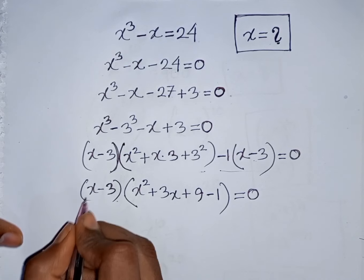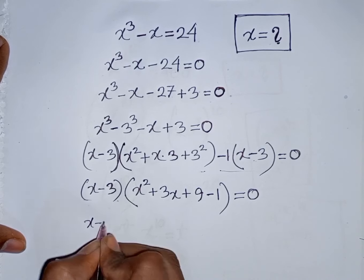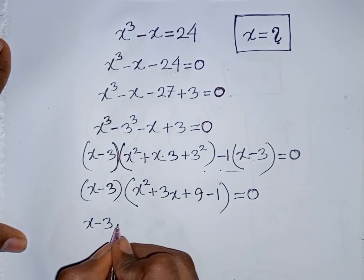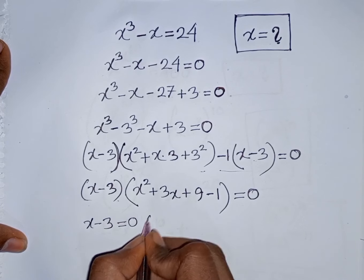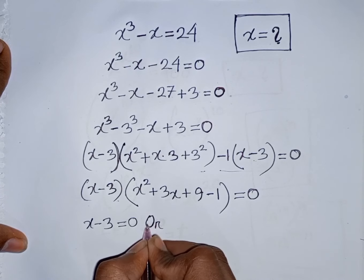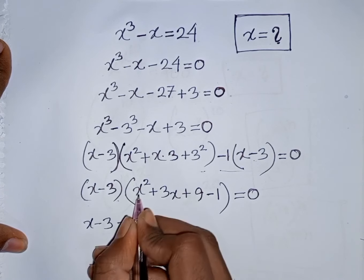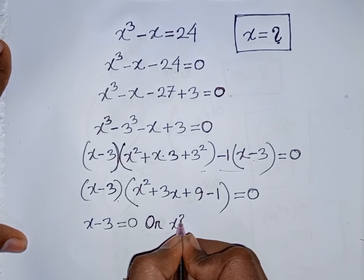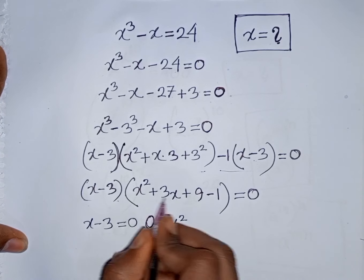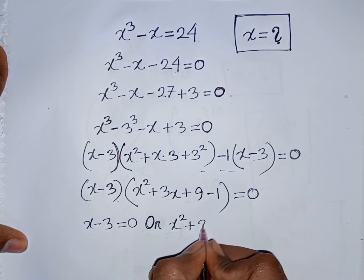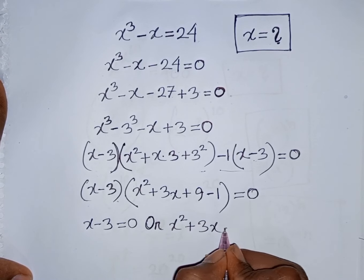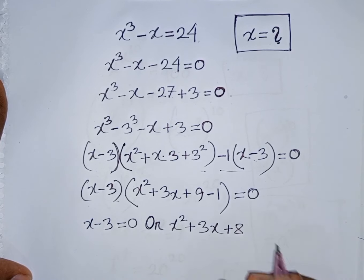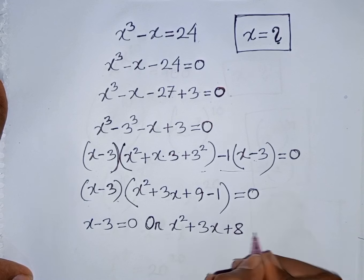Now, we can write x minus 3 is equal to 0, or x square plus 3x plus 9 minus 1, that means plus 8, is equal to 0.